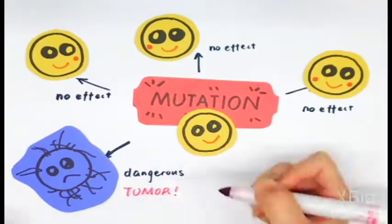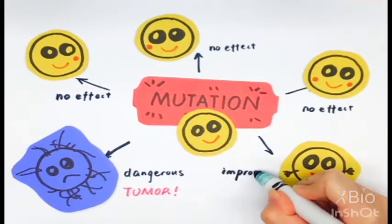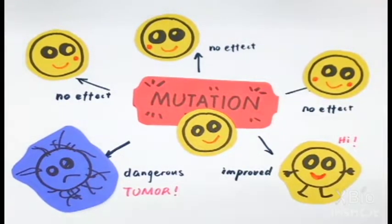On even rarer occasions, mutations can actually be useful and improve a cell. This is how genetic changes happen in evolution.